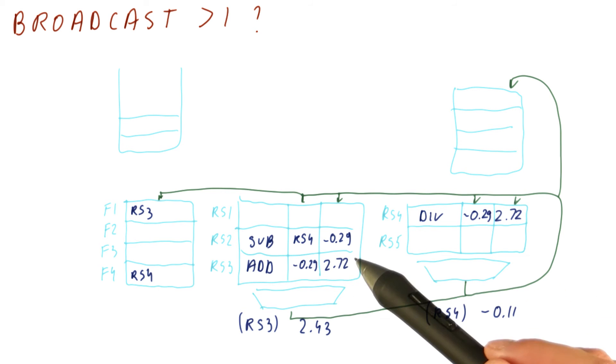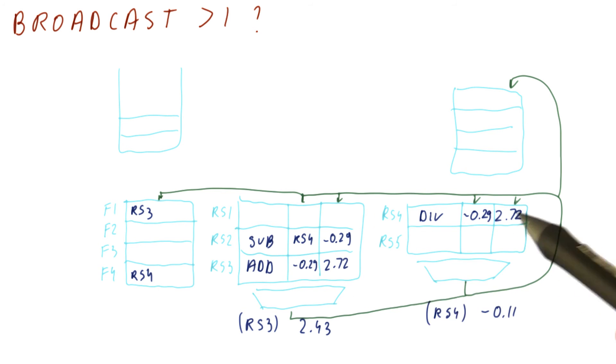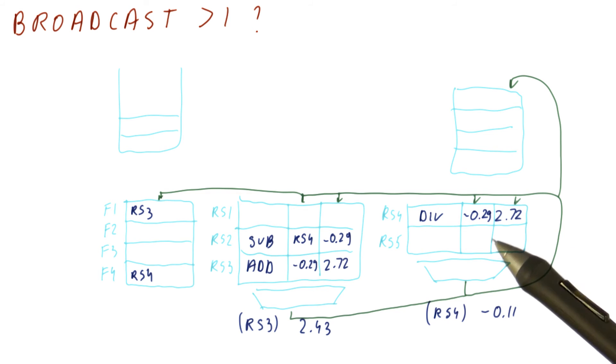But instead of considering the age of each instruction, in which case we would have to carry additional information here, what we do is we simply give the priority to the slower unit. So this is a very common heuristic and that's usually what ends up being used.